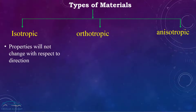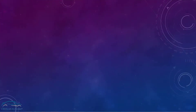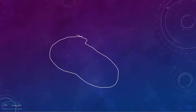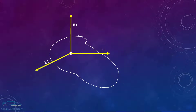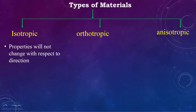In case of isotropic material, properties will not change with respect to direction. At any point inside the material, the properties are not going to change with respect to direction — as you can see in the figure, in all directions the property will remain the same. Common examples of isotropic materials are metals and glass.